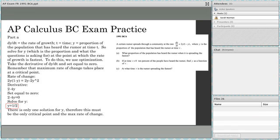Okay, in looking at Part A, we have that dy/dt, which is the rate of growth, so how fast the rumor is spreading. T is time, and y is the proportion of the population that has heard the rumor at time t. So if we solve for y, which is the proportion and what the question is asking for, it says what proportion of the population has heard the rumor when it is spreading the fastest? That's what we want. We want to find y at the point at which the rate of growth is the fastest.